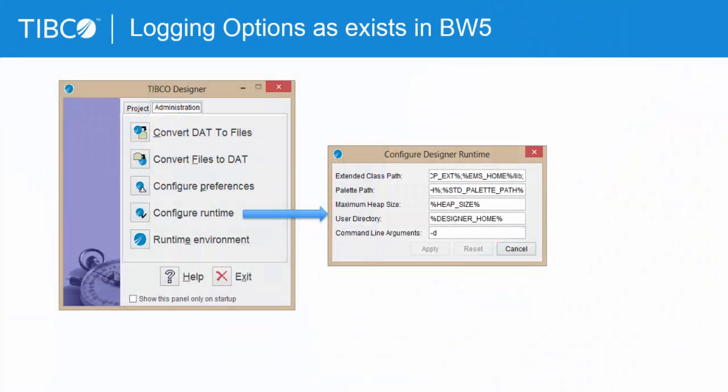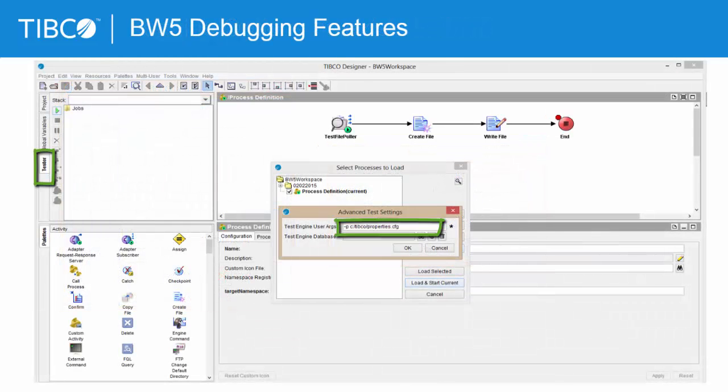First, let us take a look at the logging options that exist in BusinessWorks 5 world and then the new logging configuration in BusinessWorks 6.x. In BusinessWorks 5 you could set the TIBCO Designer in debug mode to see detailed information or error messages on the console, or you could also set custom properties for the process engine that TIBCO Designer runs by creating a properties file and specifying its location in the user arguments field as shown in the snapshot here.